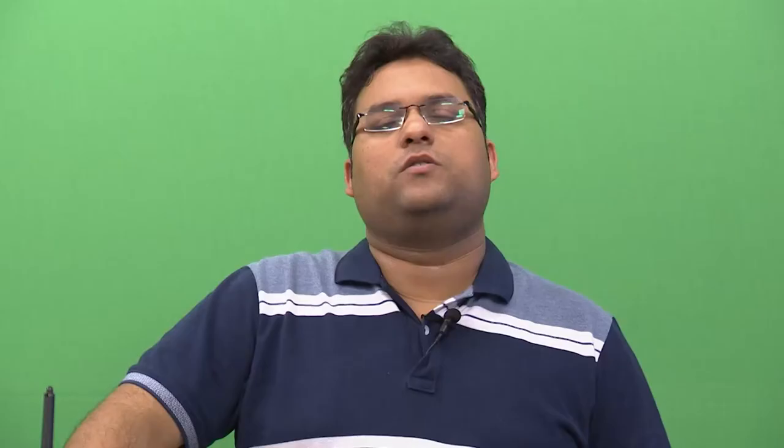Today we are going to talk about the neural basis of word meaning. If you remember, in the chapter on word processing towards the end, we did talk about how word meanings might be organized. Let us look at that a little bit more, do a revision, and then see which areas of the brain are helping us do that job.